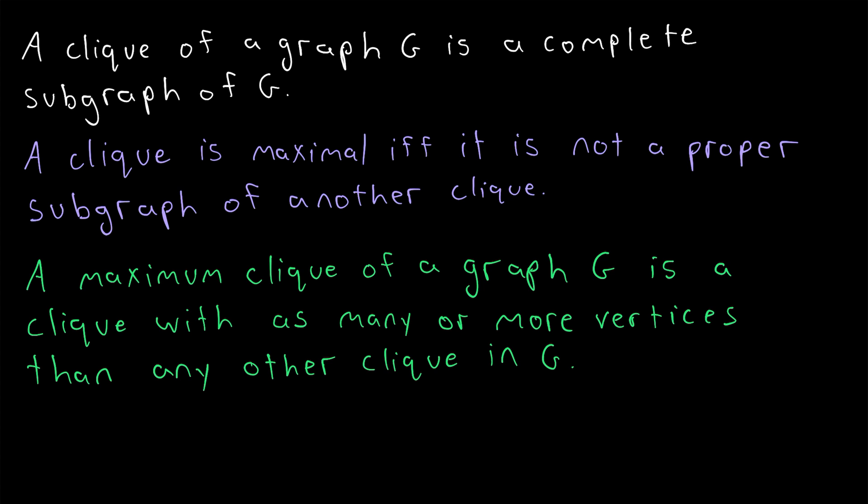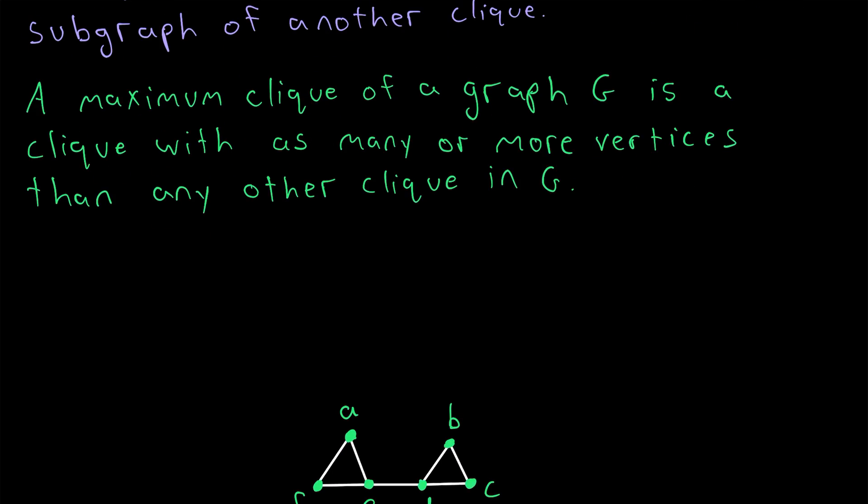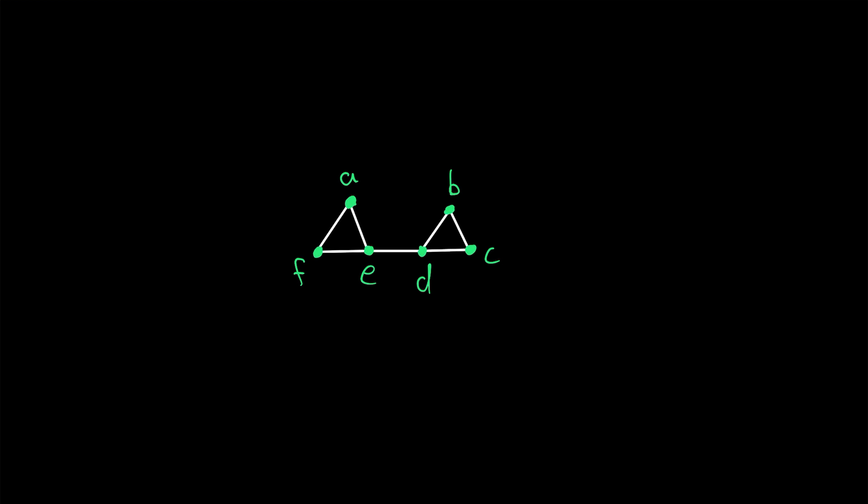Notice the wording here that we say a maximum clique is a clique with as many or more vertices than any other clique in G. This is telling us that it's possible there are multiple maximum cliques in a graph. So let's jump into an example to really flesh these concepts out.